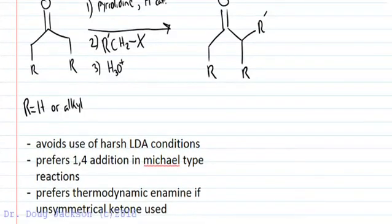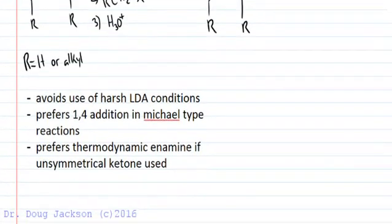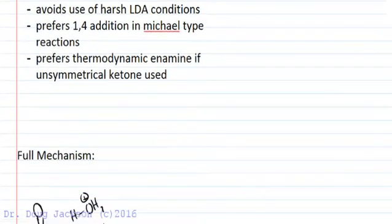If we are using an unsymmetrical ketone — I've drawn a symmetrical ketone here — but if we're using an unsymmetrical one, we will prefer the more thermodynamic enamine if that situation arises for the alkylating reagent.